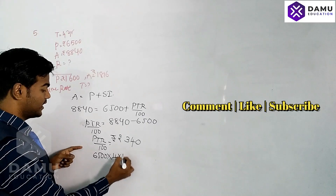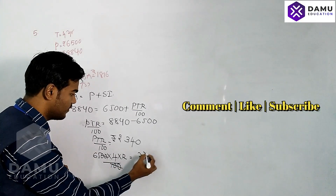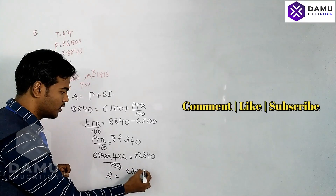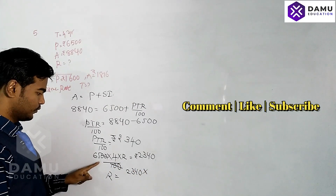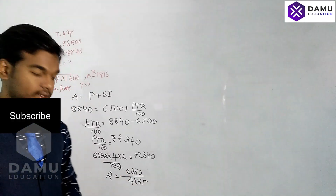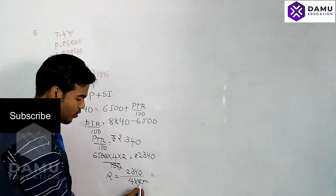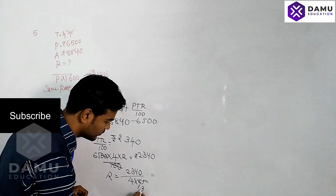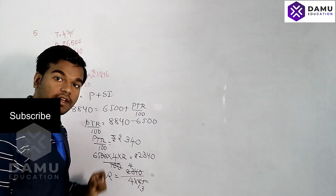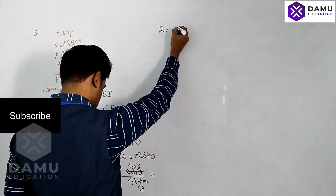P is already known — that is six thousand five hundred. Time is also known — that is four years. Rate we don't know. Dividing by hundred, the two zeros cancel. Then rate will be equal to two thousand three hundred and forty divided by four into sixty-five, which gives us rate equal to forty-six point eight divided by four.